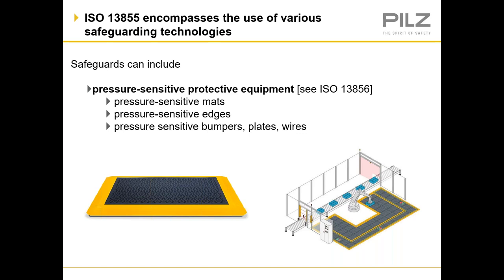Pressure sensitive mats, safe edges, and bumpers all have a standard — EN ISO 13856. These may operate in various ways: standing in a certain position may restrict the robot to the opposite side of its working area, or the machine stops completely. Safe edges and bumpers detect contact — you often see them at the bottom of bay doors to make sure people don't get closed in on them.